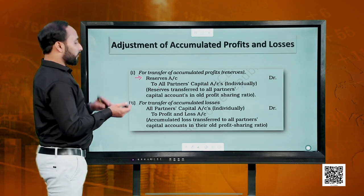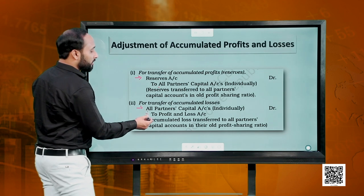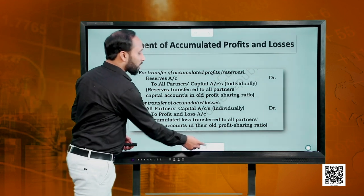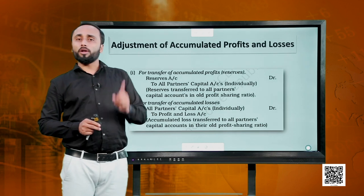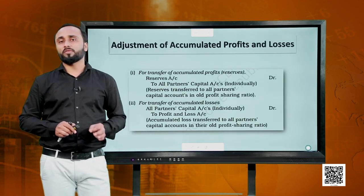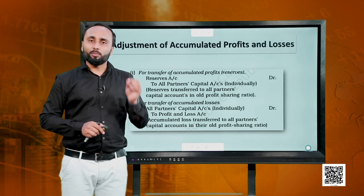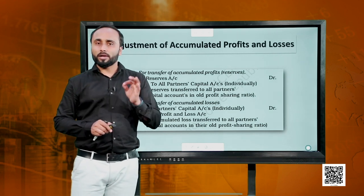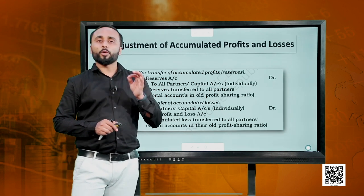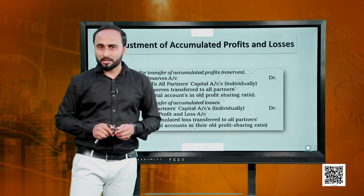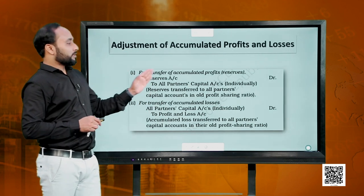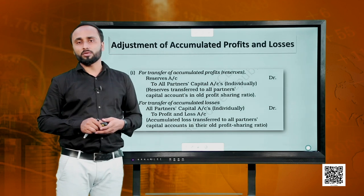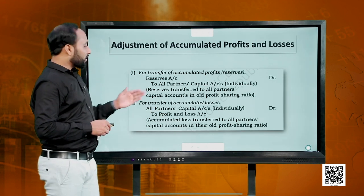Since reserves are liabilities, on being written off they are debited, while all the partners — all the partners in the firm before reconstitution — are credited in their capital accounts in their old ratio. When there are losses, you do the reverse: debit the partners and credit the respective loss accounts like the P&L account. If reserves appear on the asset side, like the advertisement suspense account or a P&L debit balance, you credit them and debit the partners.